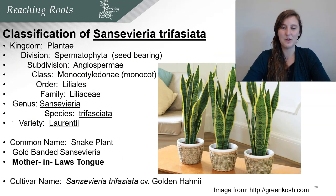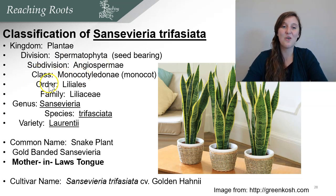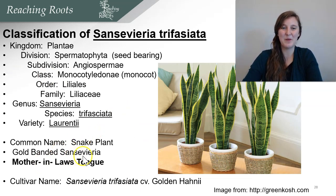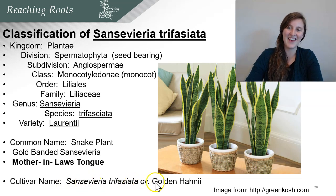Let's review what we've covered so far using mother-in-law's tongue as our example. The kingdom is plant. The division is seed-bearing. The subdivision is angiosperm. The class is monocotyledon, or monocot for short. The order is Liliales, and the family is Liliaceae. Then we have the genus and the species, and also the variety. The common names include snake plant, golden band, and mother-in-law's tongue. When writing the cultivar name, we write the scientific name — which is the genus, the species, and then the cultivar.